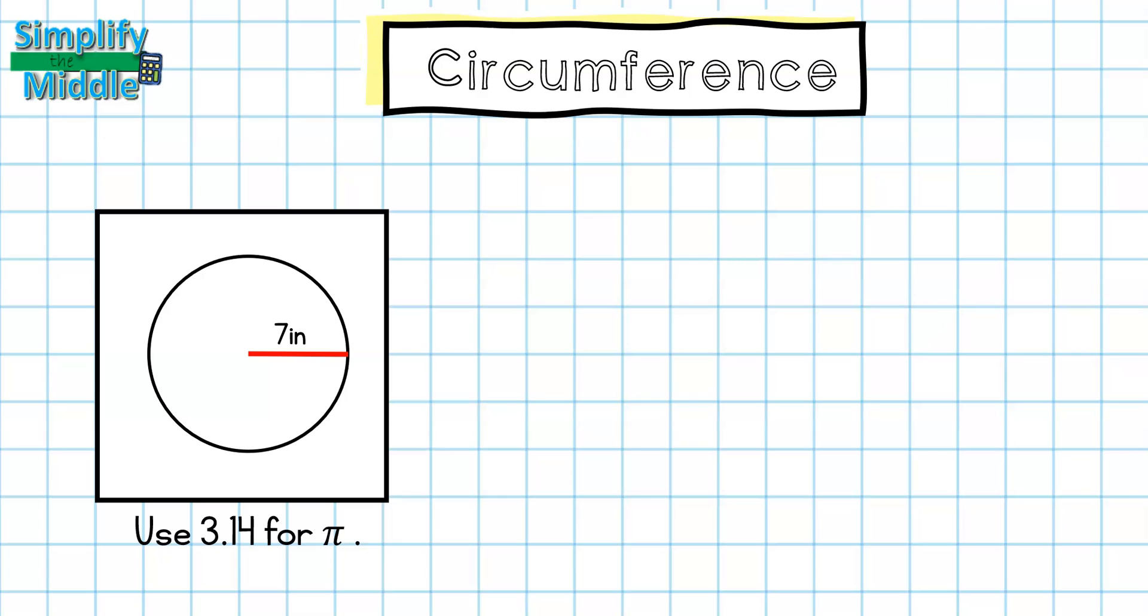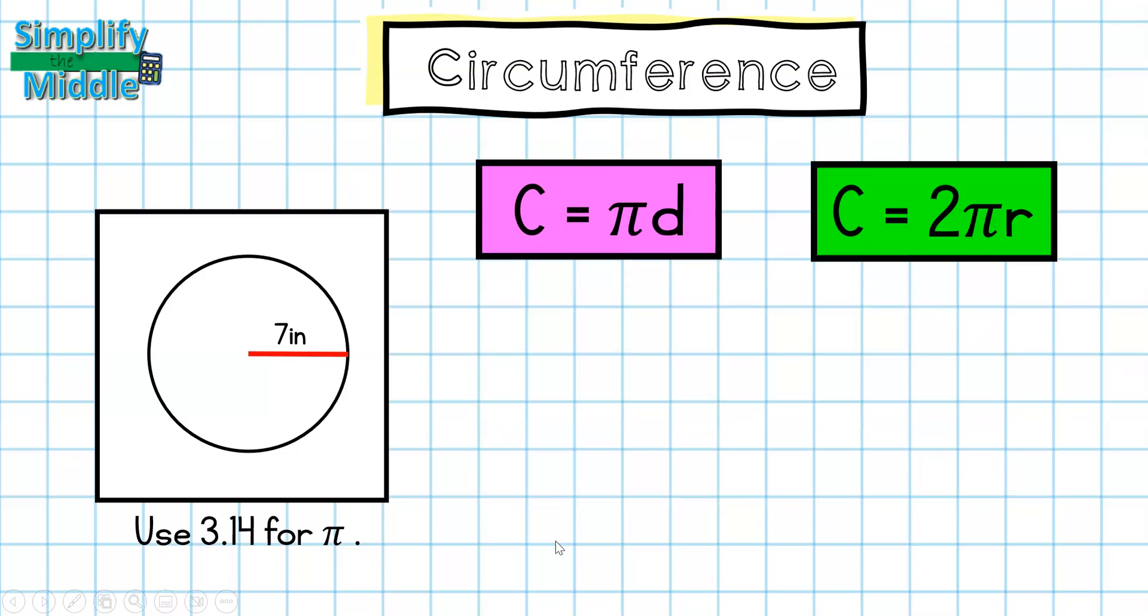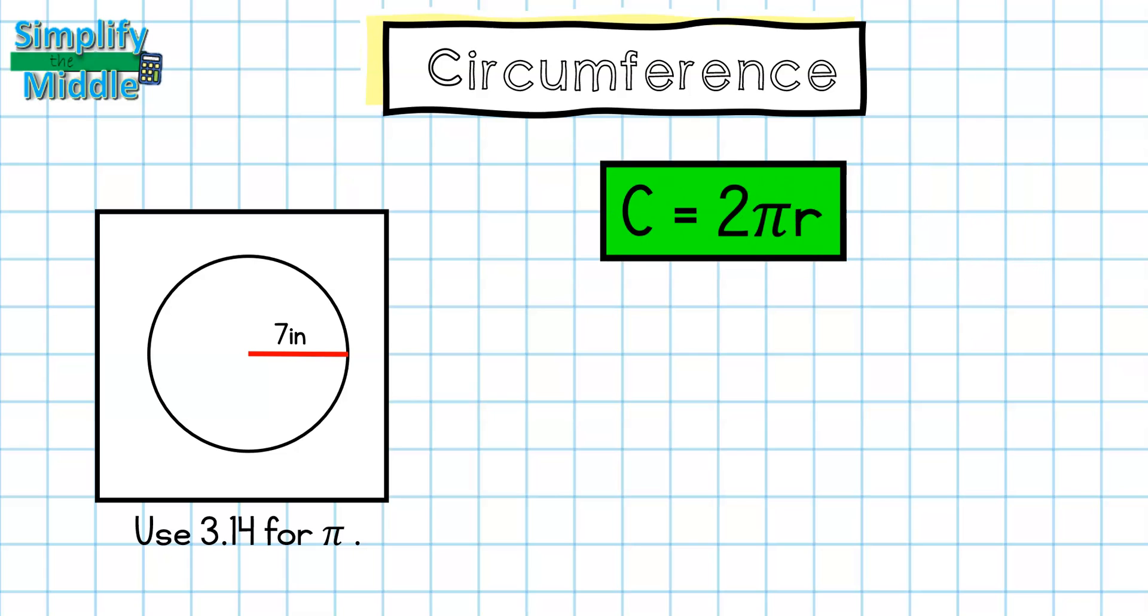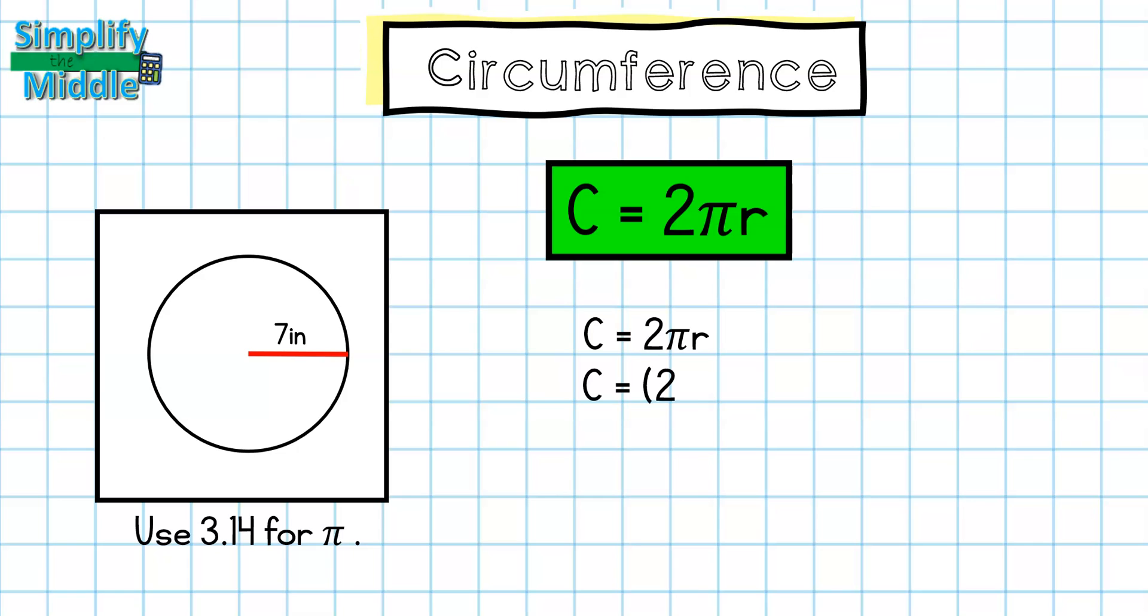In this first problem, I see that I'm going to be using 3.14 for pi. I also see I have a radius and the radius is seven inches. So using those formulas, I am going to use the second one that has radius in it already. My first step for circumference problems is to write the formula.